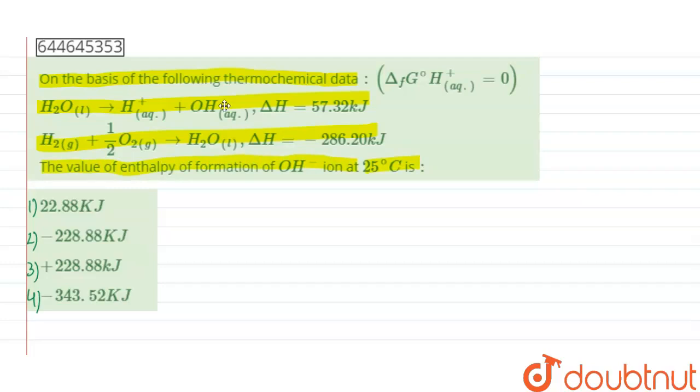Now here given that enthalpy of formation of H plus is equal to zero. Now if we consider the first equation, that is equation number one, and here equation number two, by adding equation one and two we get the overall equation.